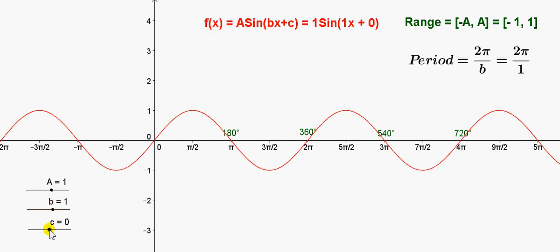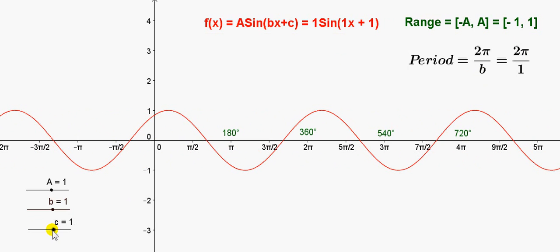So if we increase c up to 1, we have shifted the graph to the left by 1 radian. Remember, π radians is 3.14. So by increasing c by 1, we've just shifted the graph by 1 unit to the left. That's about a third of the distance of 0 to π.